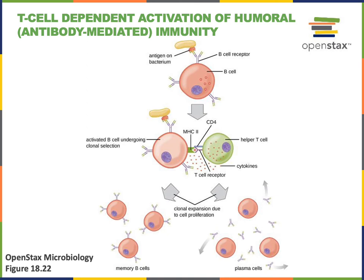The T cell dependent activation of antibody-mediated immunity will start with the B cell receptor binding to the antigen on the surface of a pathogen like a bacterium. Then that B cell will engulf the pathogen through phagocytosis, break down the pathogen, and display on its surface antigens from the pathogen. The B cell functions as an antigen presenting cell, presenting the antigen from this pathogen to a helper T cell. When the helper T cell is activated by the antigen displayed from the B cell, the helper T cell will secrete cytokines that complete the activation of the B cell through a juxtacrine signaling mechanism.